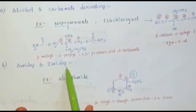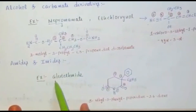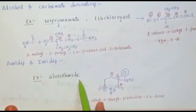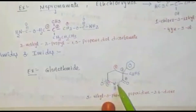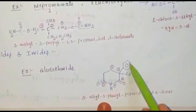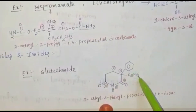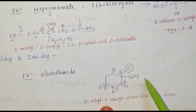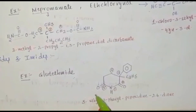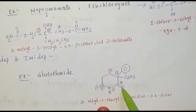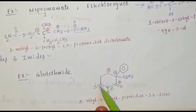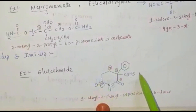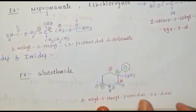The second subclass is amides. Example: glutethimide. It contains a piperidine moiety attached with a phenyl ring and a C2H5 group, with two dione moieties at the 2,5 positions. That is called glutethimide.